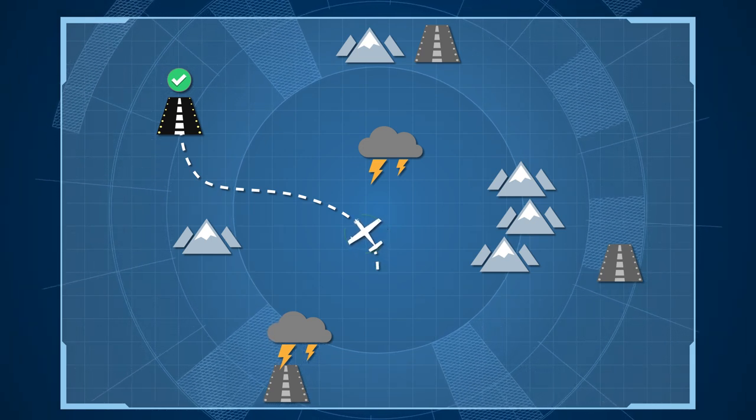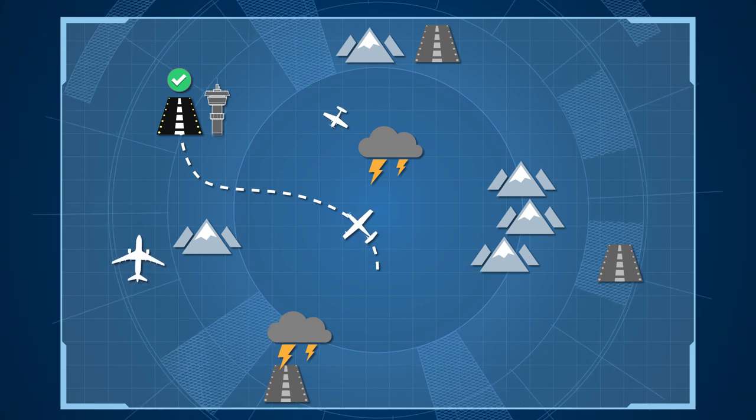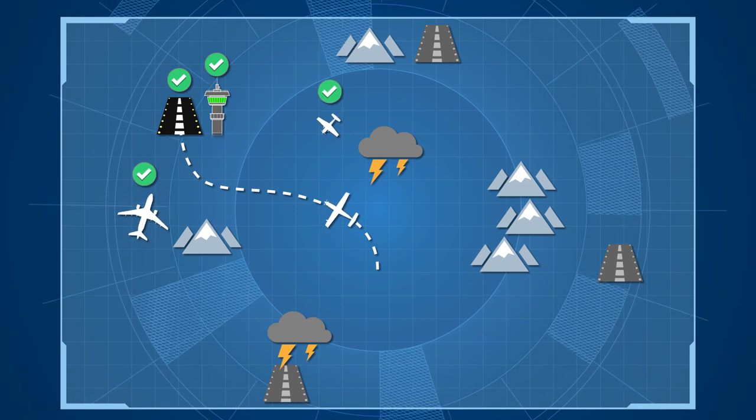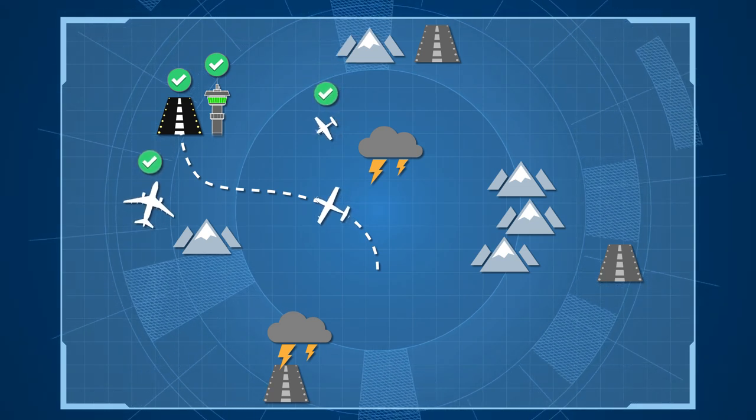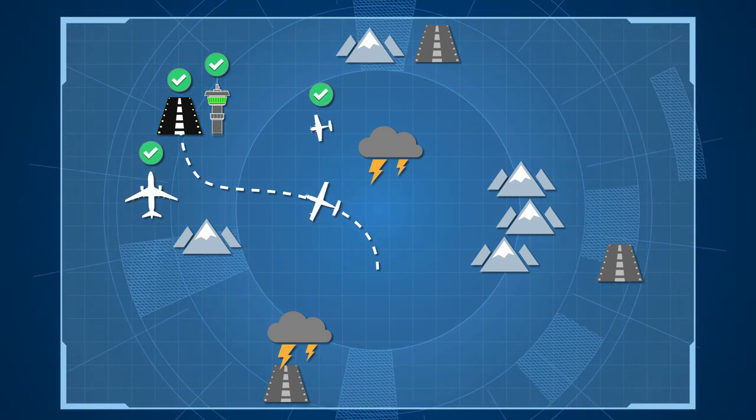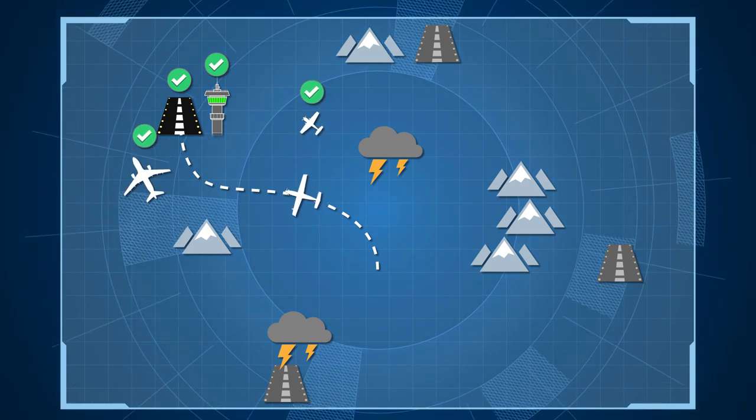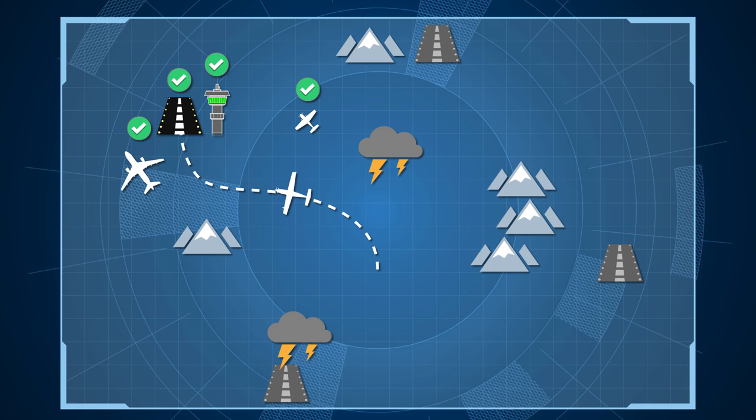At the same time, HomeSafe will communicate by radio to notify air traffic control and other aircraft about the airplane's emergency status, as well as the selected landing site and the necessary parameters for the flight's completion in the safest conditions. These communications can be heard by the passengers.